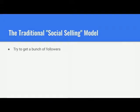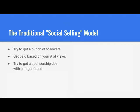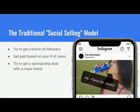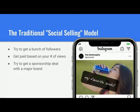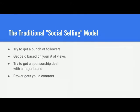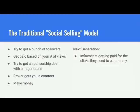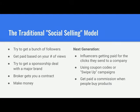In social selling, you try to get a bunch of followers. If you get enough, you get paid based on views, or you do a sponsorship video — like jumping up and drinking a Diet Coke — and Diet Coke pays you based on your view count. The next generation is influencers getting paid for clicks using coupons or swipe-up technology, earning a commission when someone makes a purchase as a result of their video. We are all of that, with one major difference.